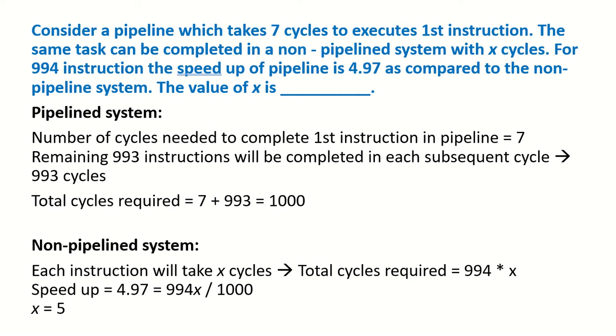Consider a pipeline which takes 7 cycles to execute the 1st instruction. The same task can be completed in a non-pipeline system with X cycles. For 994 instructions, the speedup of the pipeline is 4.97 as compared to the non-pipeline system.